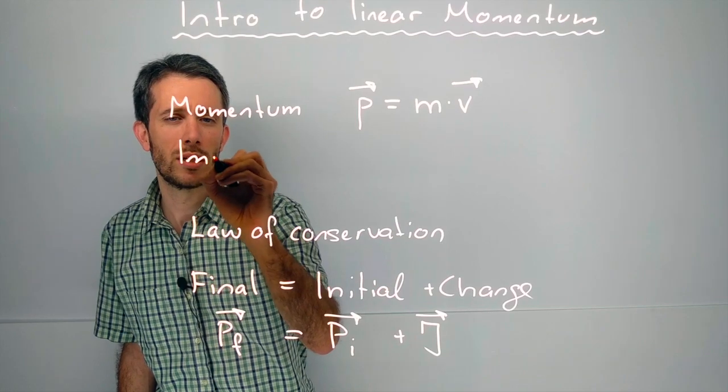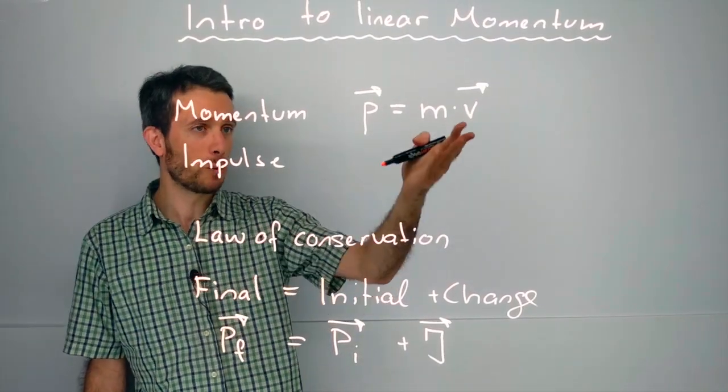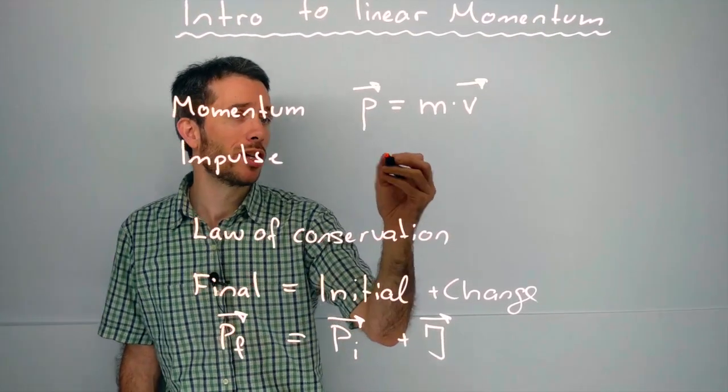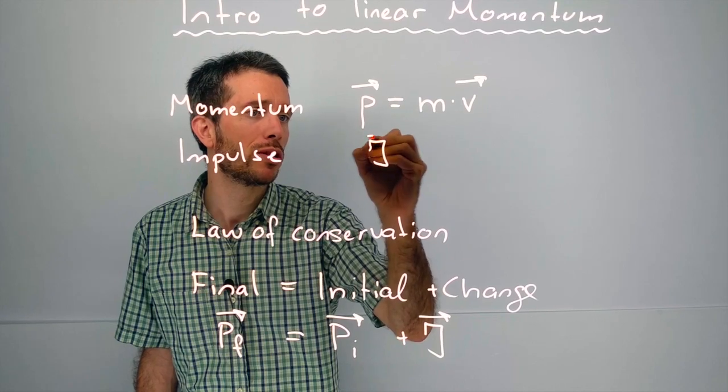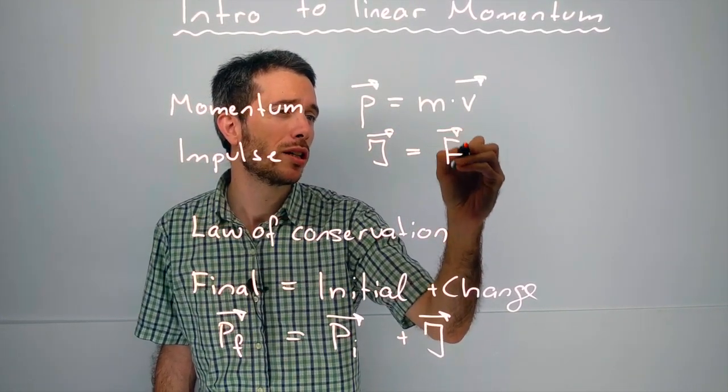So, impulse, how can we change how an object is moving? It's through forces. The longer a force acts, the more change you will have. So, this impulse is defined as the force acting on the object times the time.